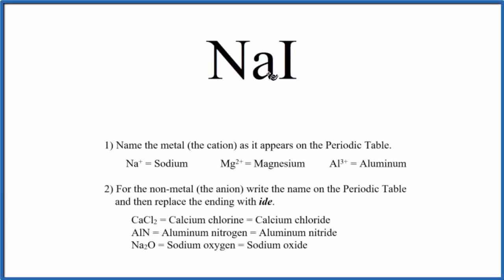To write the name for NaI, we first need to recognize that this is an ionic compound. We have a metal and a nonmetal. So when we have a metal and a nonmetal, we have an ionic compound.